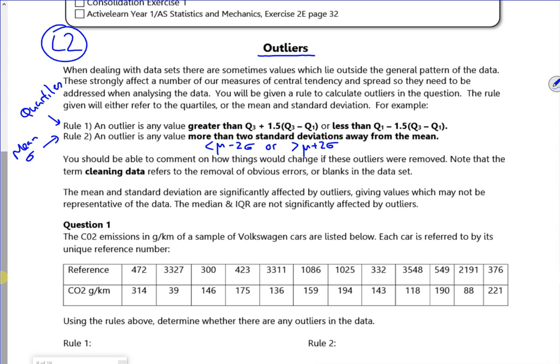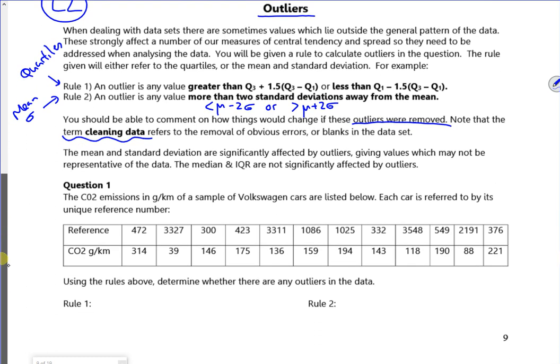It says you should be able to comment on how things would change if the outliers were removed. We call it cleaning the data, so there might be errors that are dead obvious or it might be because these are just going to identify issues. It might be that, well actually, the data's true, it's just what it is. The mean and standard deviation are significantly affected by outliers where the median and IQR are not.